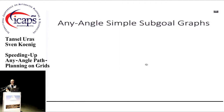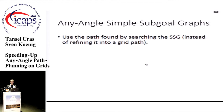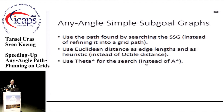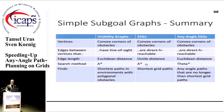For the any-angle version of simple sub-goal graphs, there are three small modifications. First, once you find a path on the high-level graph, you follow it in straight lines rather than on the grid. Second, we use Euclidean distance as edge lengths and as the heuristic rather than octile distance, helping find shorter any-angle paths. Third, we use Theta star instead of A-star. In summary, simple sub-goal graphs are sparse visibility graphs that are faster to search, and we use Theta star on them to find short any-angle paths.